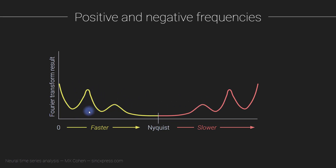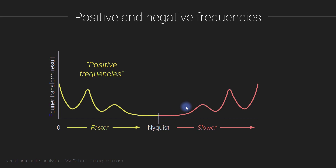We call the frequencies that go from zero to Nyquist the positive frequencies. In general, the sine waves in the Fourier transform get faster and faster as you approach the Nyquist frequency. Then a funny thing happens past the Nyquist: the sine waves actually get slower and slower. The reason is that the sine waves are spinning faster than how we can discretize them inside the Fourier transform. So the sine wave frequencies get so fast that we cannot fully reconstruct their rhythmicity — that is aliasing.